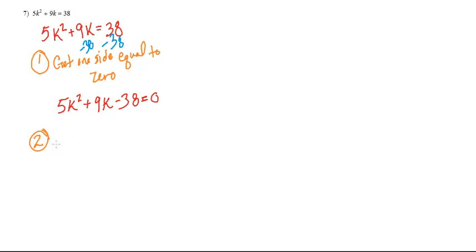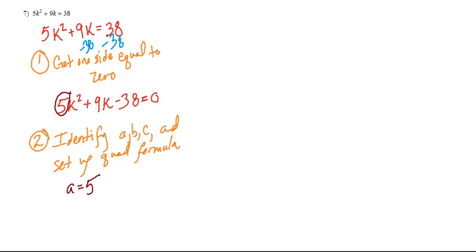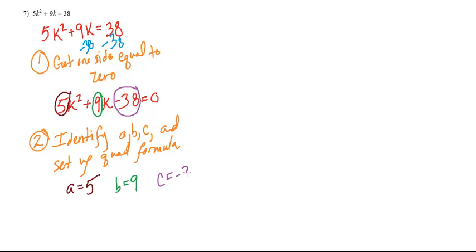Next thing we want to do is, in this case since we're just going to be using the quadratic formula, we identify A, B, and C, and set up the quadratic formula. Now before I get too far into this, let's identify the A, B, and C first. A is 5, B is 9, it's the thing attached to K, and then C is going to end up being negative 38. There's a lot of kids who will forget that negative.